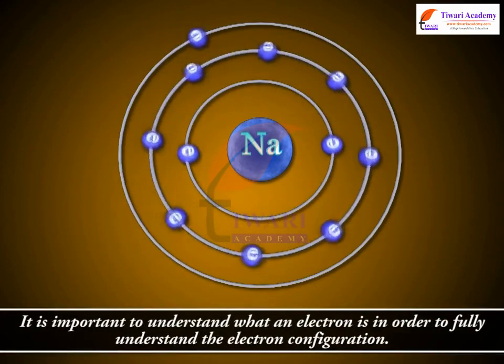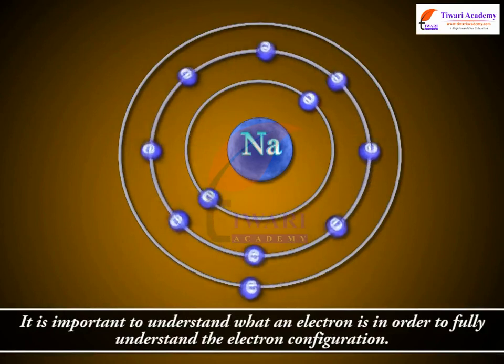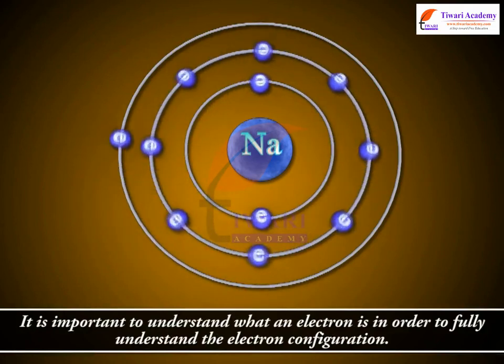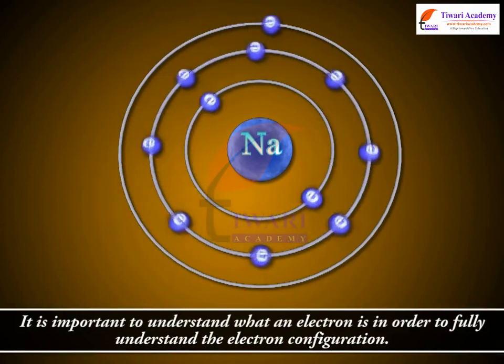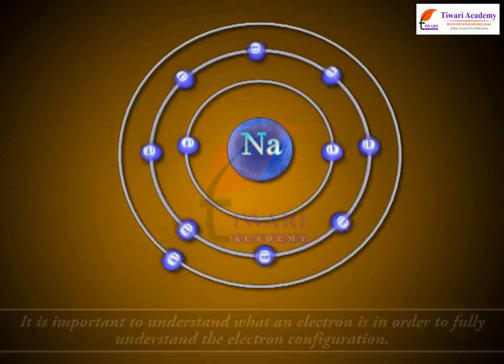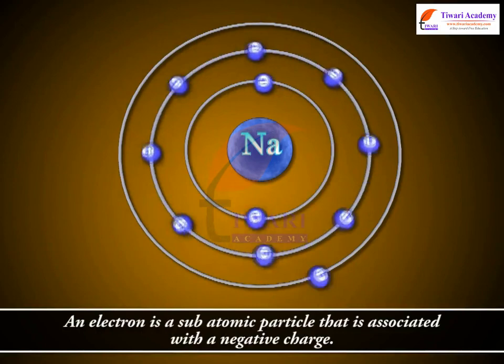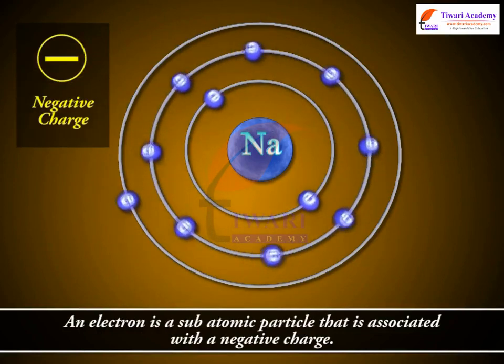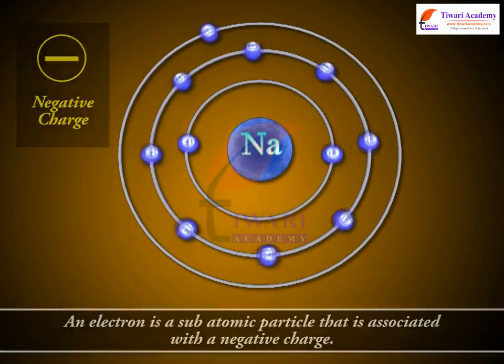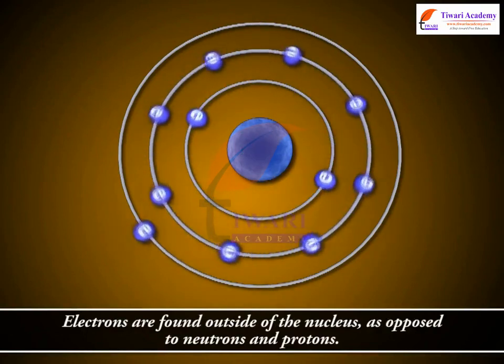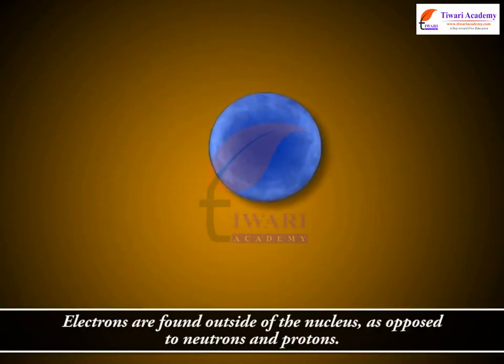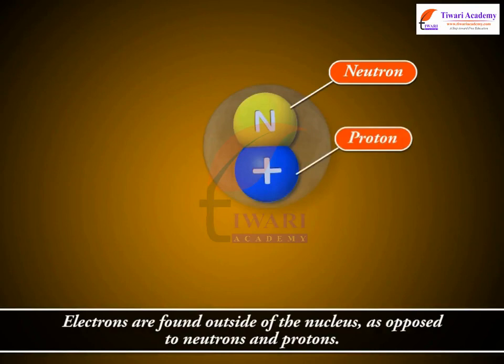It is important to understand what an electron is in order to fully understand the electron configuration. An electron is a subatomic particle that is associated with a negative charge. Electrons are found outside of the nucleus as opposed to neutrons and protons.